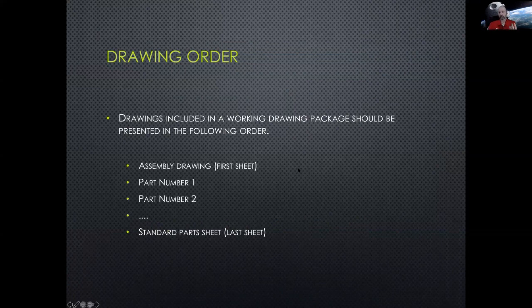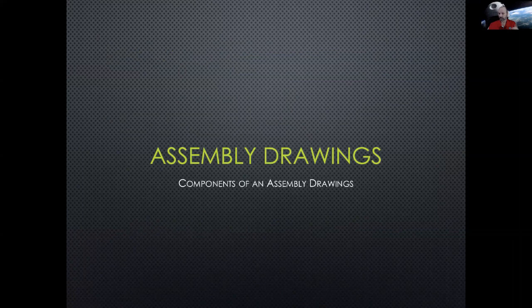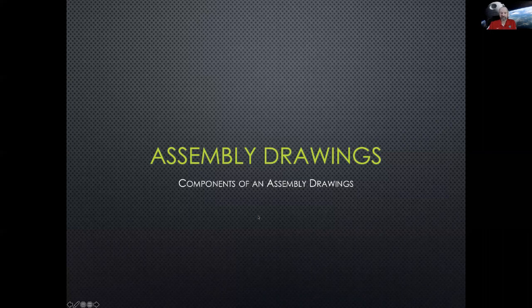The order of a working drawing package starts with the assembly drawing showing how everything goes together and what it looks like overall. Then if you have sub-assemblies, you'd have an assembly drawing followed by those sub-assemblies and then the parts. The last sheet is the standard part sheet, which could be 10 pages long or 200 pages long, depending on how many parts you have.